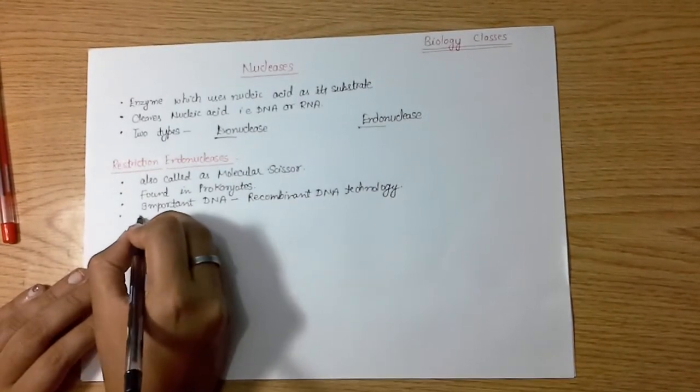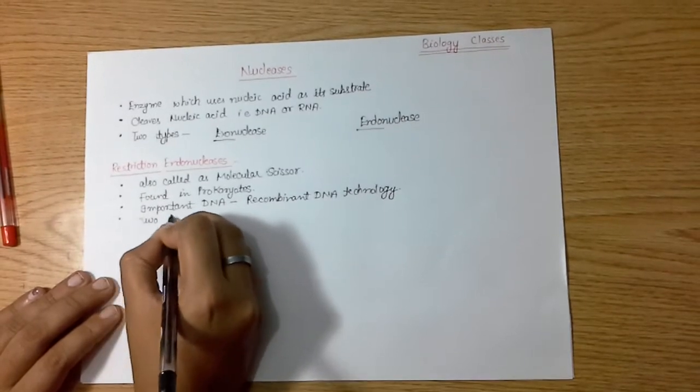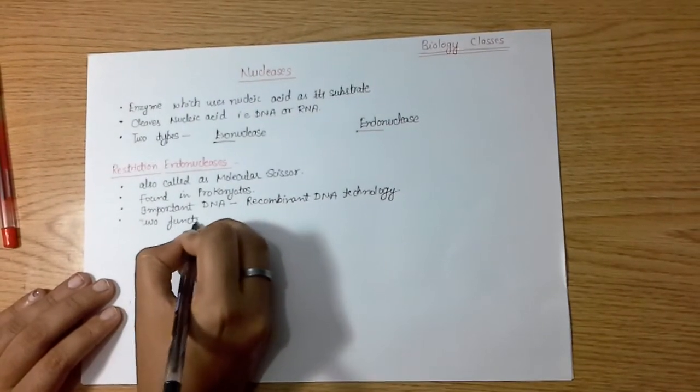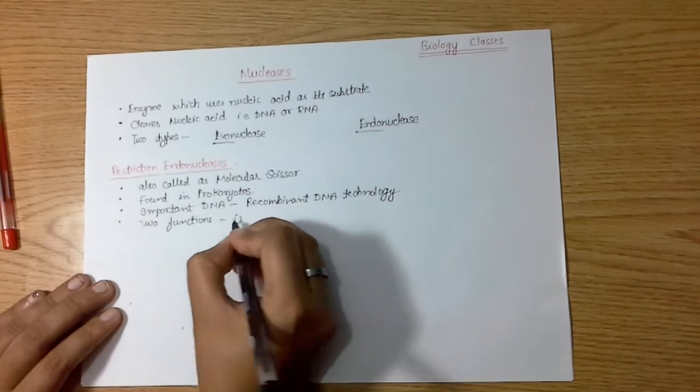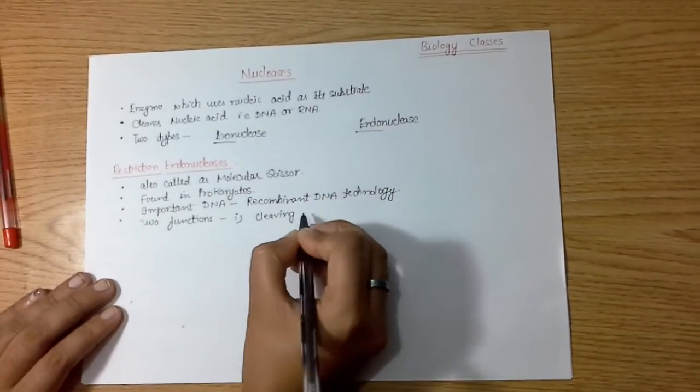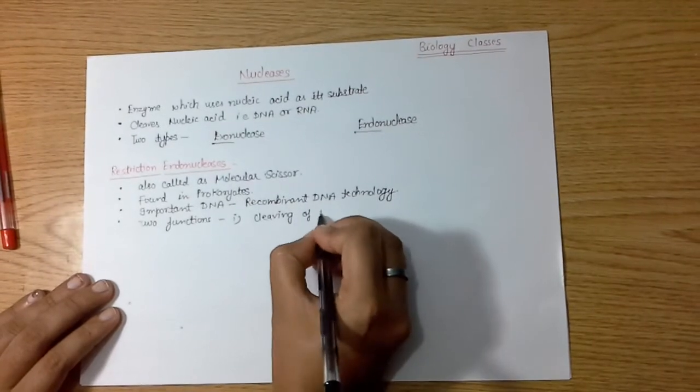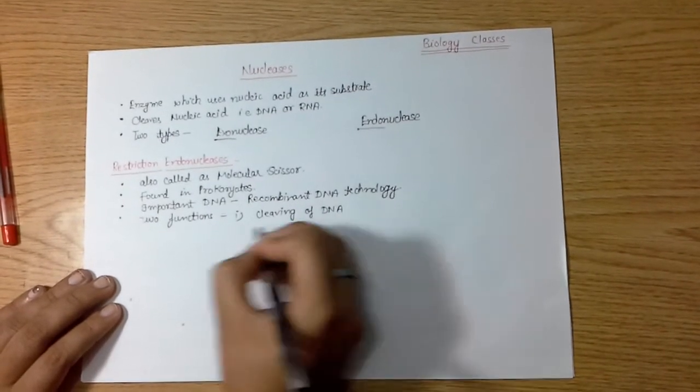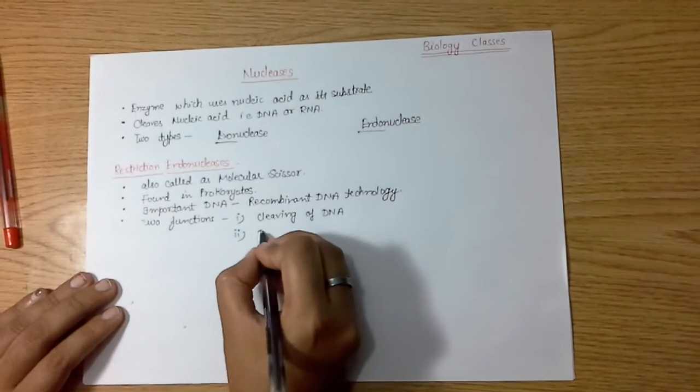Generally, restriction endonucleases provide two functions. Number one is the cleaving of DNA—it is an endonuclease by its nature. And second is the defense mechanism.